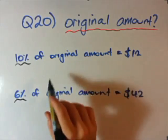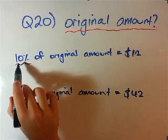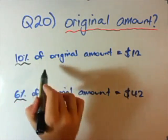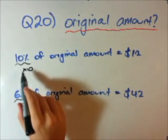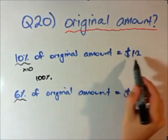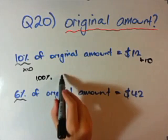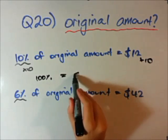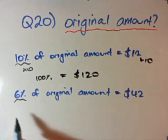The golden rule here is we're trying to get these percentages to 100, and whatever we do to the percentage we do to the value — like a mini equals sign. To get 10% to 100% we times by 10. So if we times $12 by 10, then 100% equals $120. That is our original amount.